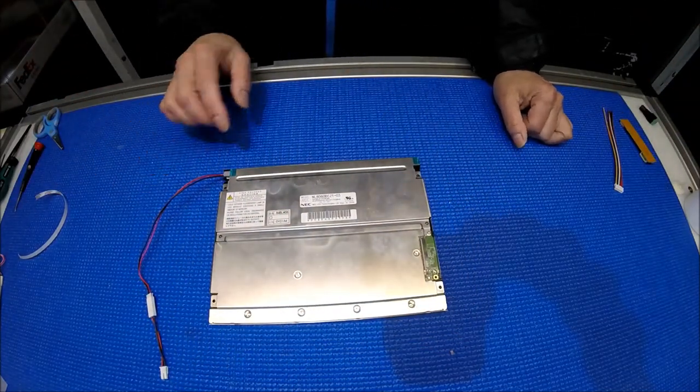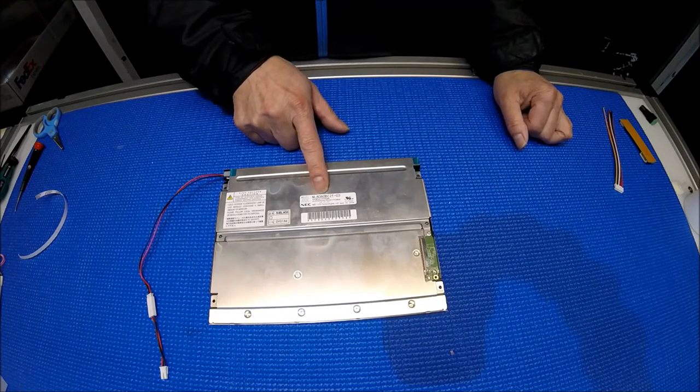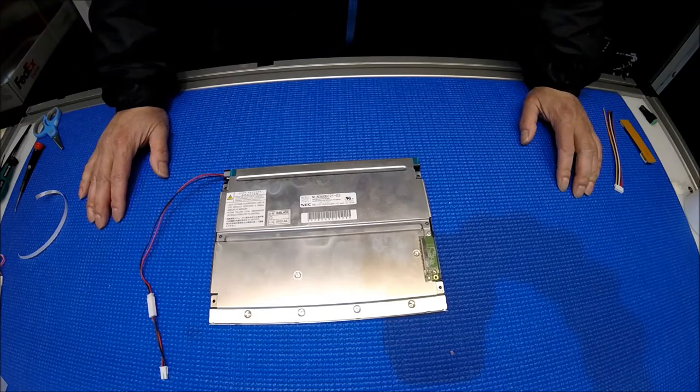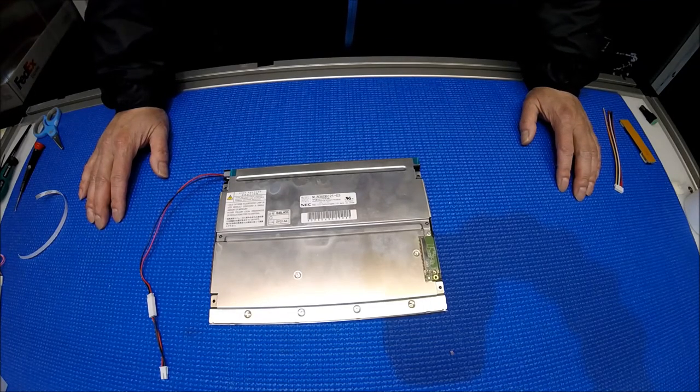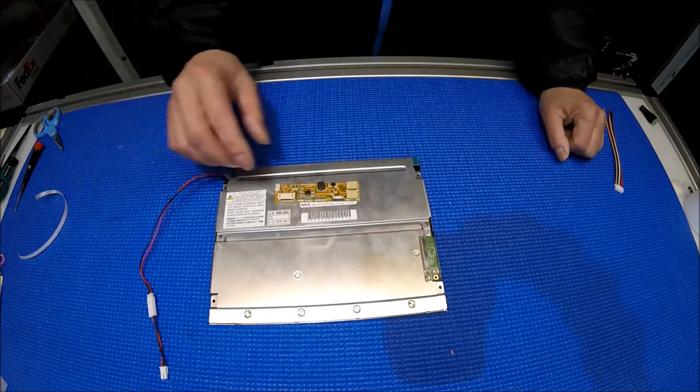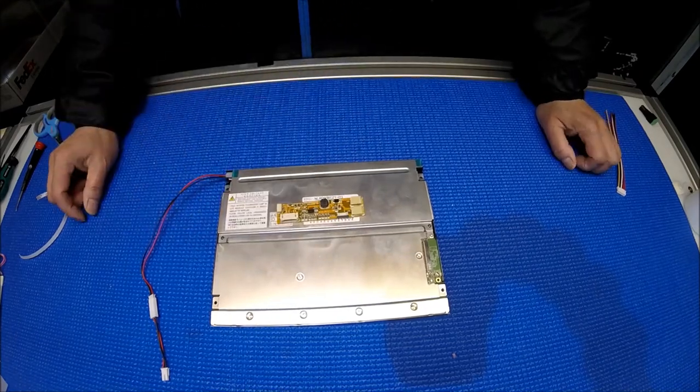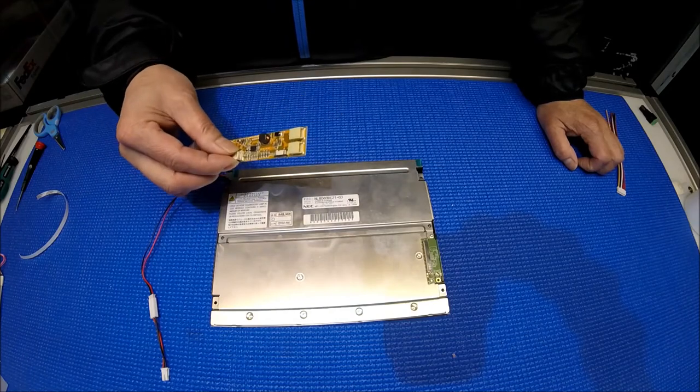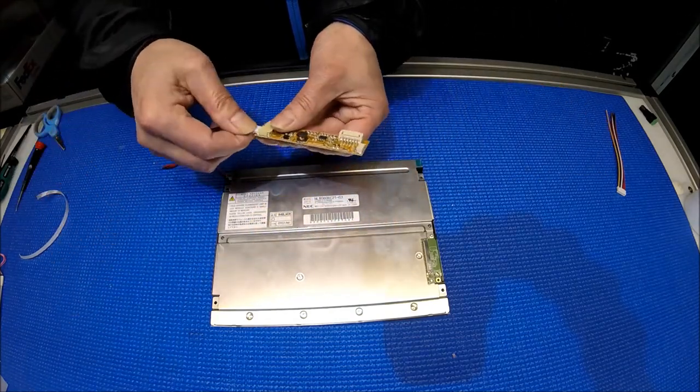One thing I want to mention is that most of these screens, the NL8060BC21-03, the original inverter is using a 5 volt supply. But unfortunately our driver cannot take the 5 volt, so you need to find any voltage from your power supply anywhere between 10 to 24 volt to drive this.